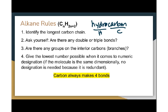When you go to name and write these hydrocarbons, there are different types you can come up with. An alkane means that they have all single bonds — the A-N-E ending means all single bonds. But you do this procedure whether it's single bonds, double bonds, or triple bonds. First, identify your longest carbon chain. Second, ask yourself: are there double or triple bonds? Because that's when you'll change the ending.